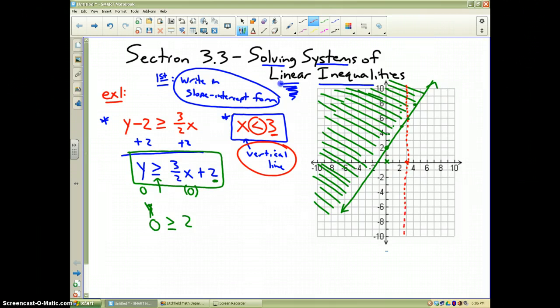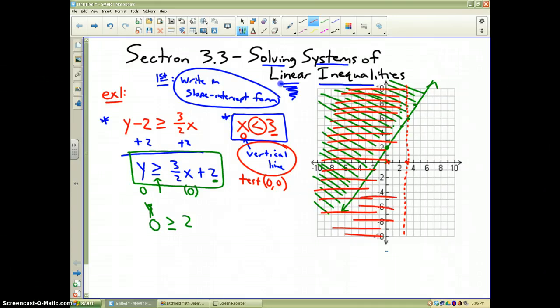Now again I'm going to test the point (0, 0) to see if it works. Well, if I put 0 in there for x, is 0 less than 3? Yes it is. So therefore the point (0, 0) works and I'm going to shade like this, all this area to the left of my vertical dotted line.